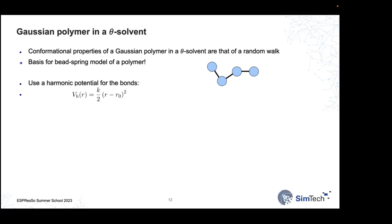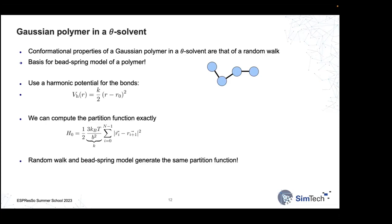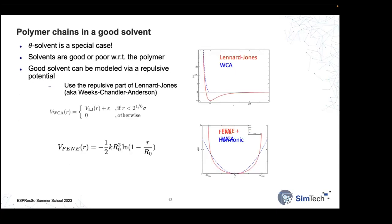In simulations we use a bead-spring model: bead particles connected by harmonic bonds. The nice result is that we can write down the exact partition function for this problem in statistical mechanics, and it turns out to be exactly the same as the random walk partition function. This is the philosophy behind the coarse graining procedure. We can also describe different solvent properties — a good solvent means monomers prefer the solvent over other monomers, described by a WCA potential.